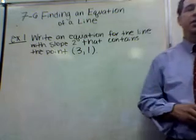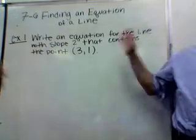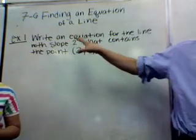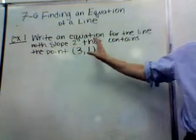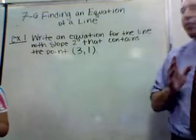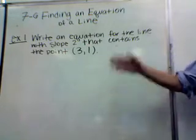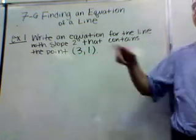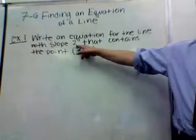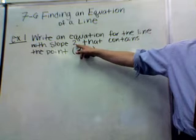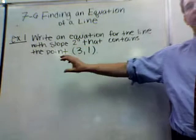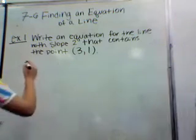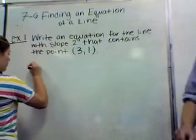Y equals mx plus b — that's one of the main ones we use, and you'll see why in just a moment. Whenever you're given any kind of problem, you always take what's given to you and use it in any way that you possibly can. So what information have they given you? They've given you m. The symbol for slope is m, so m equals 2.